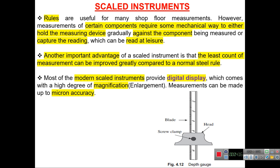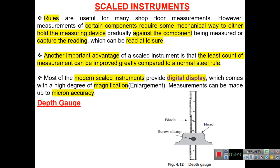Most modern scaled instruments provide a digital display, some with a high degree of magnification. Measurements can be made up to one micron accuracy — a micron being one divided by ten to the power six of a millimeter. The depth gauge is one of these scaled instruments.